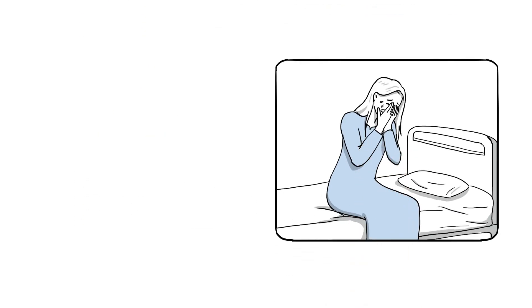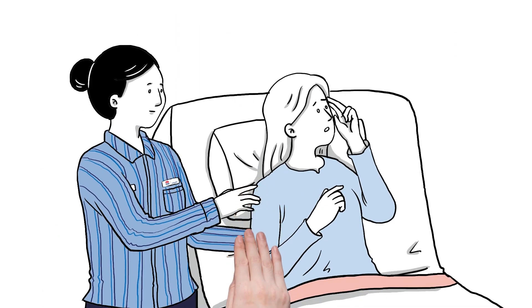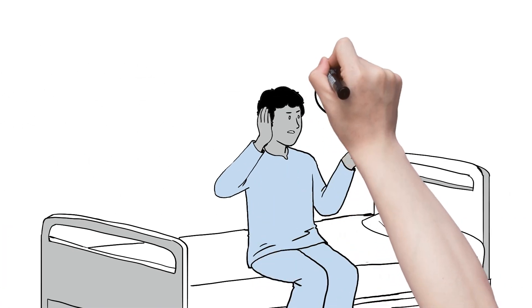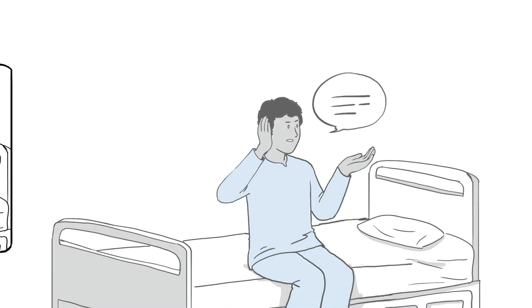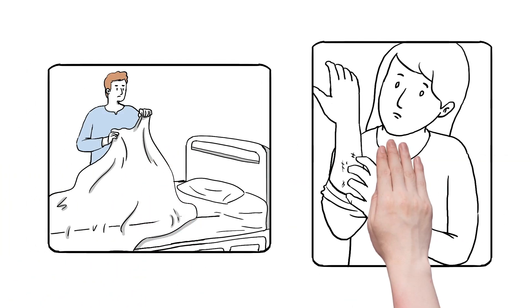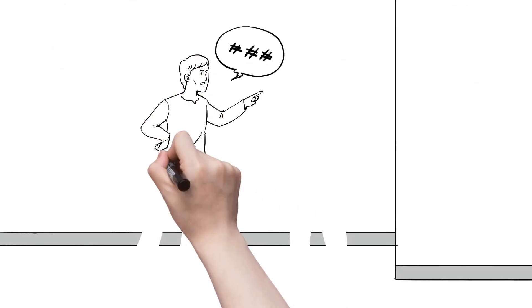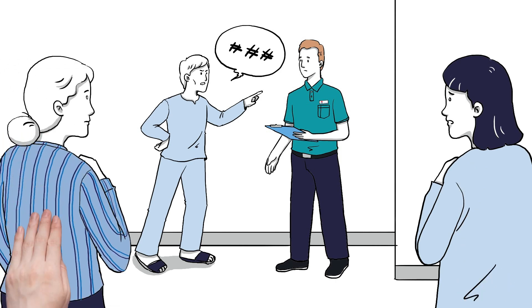Upset, tearful, angry or withdrawn behavior. Signs of confusion or disorientation. Auditory hallucinations, such as reaching or responding as if hearing voices or sounds. Tactile hallucinations, such as picking at the bedclothes or at their skin. Behavior or speech is aggressive or unwelcome and you recognize an increased risk for the person, yourself or other patients.